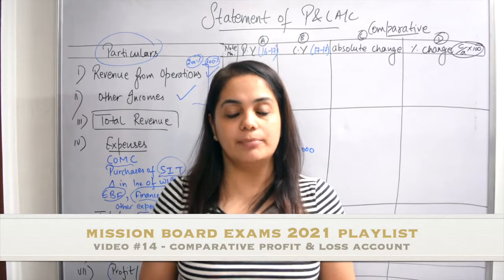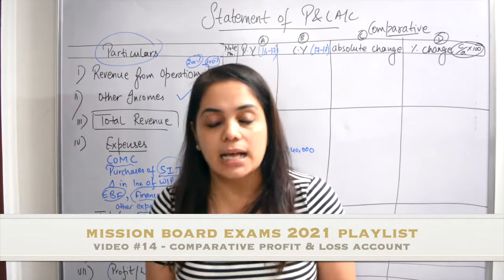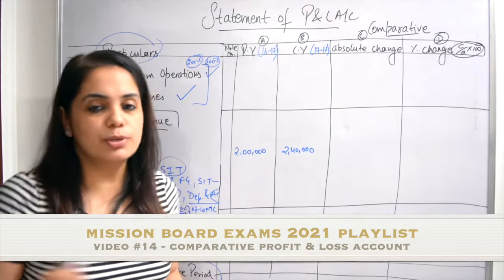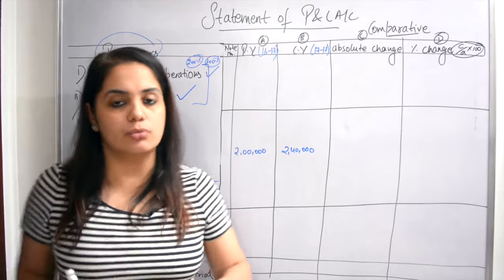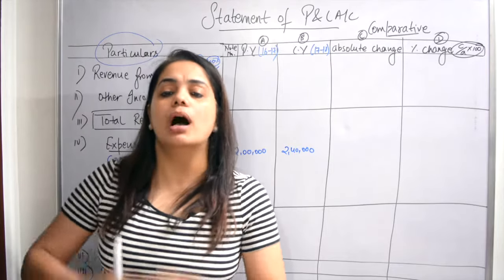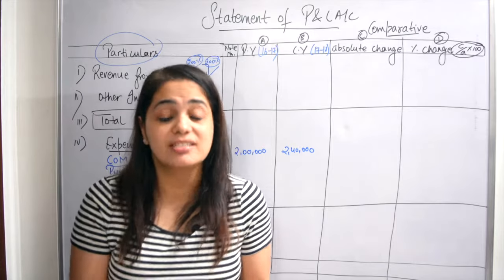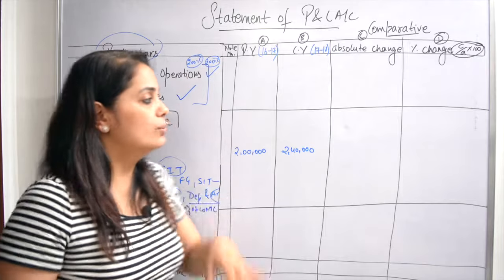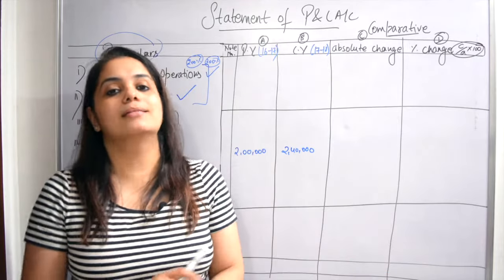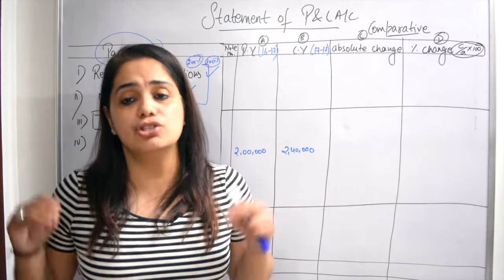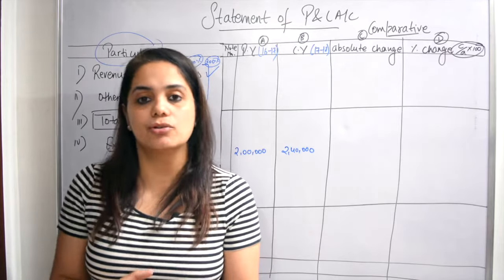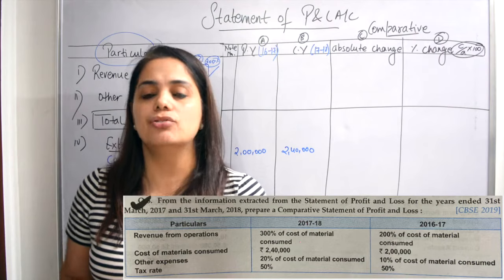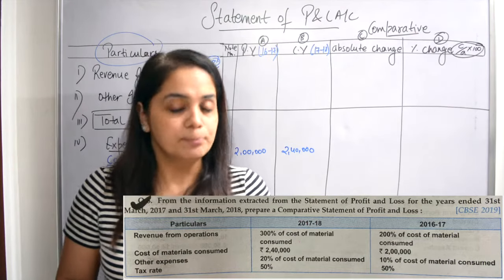Hi everyone, welcome to Mission Board Exam 2021. Let's start with our next topic: the comparative statement of profit and loss account. I have told you in the last video that the format is made of the profit and loss account. Now I will tell you how to solve this question in just three minutes. I have a very small trick for this which you will solve very easily. There is a question on your screen which has already come in 2019.